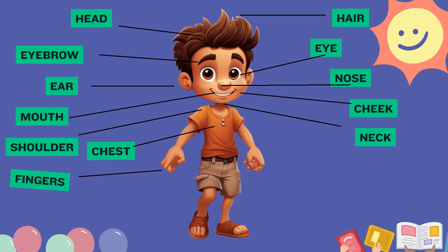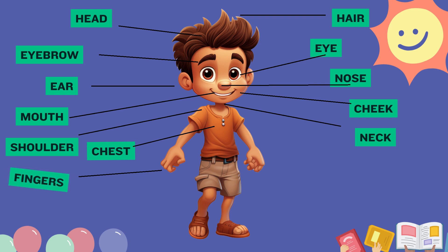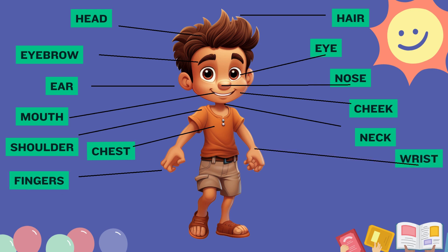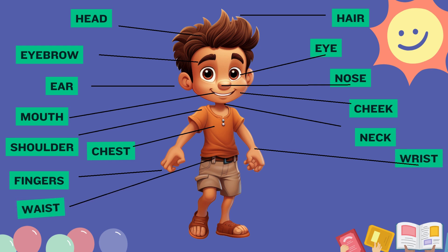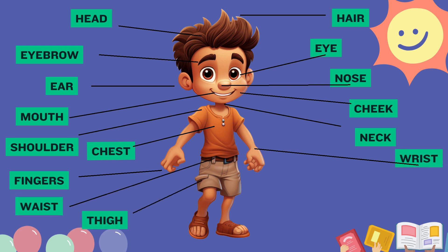Fingers. The role of human fingers is to grip anything that humans feel is necessary. Wrist. The wrist is a complex joint that allows movement of the hand in multiple directions. Waist. The waist is the part of the abdomen between the ribcage and hips.